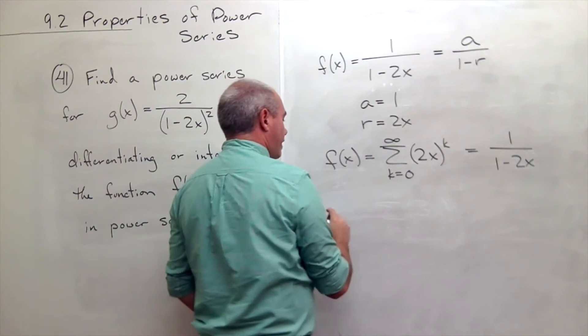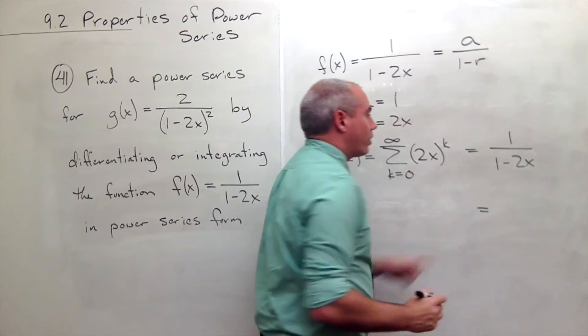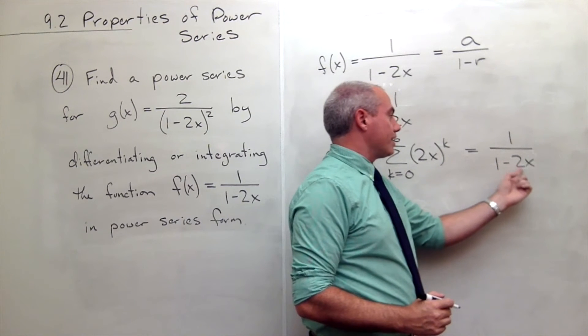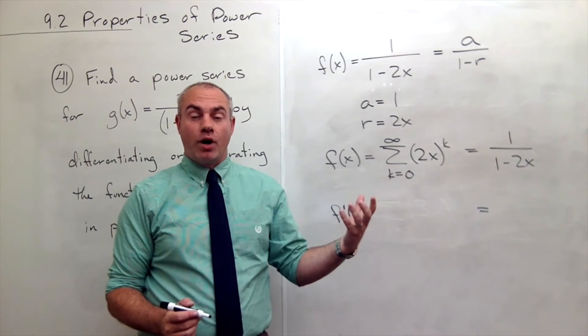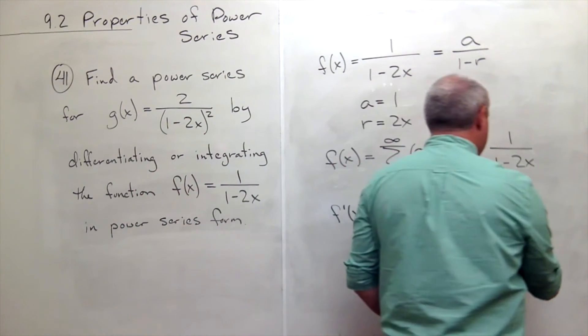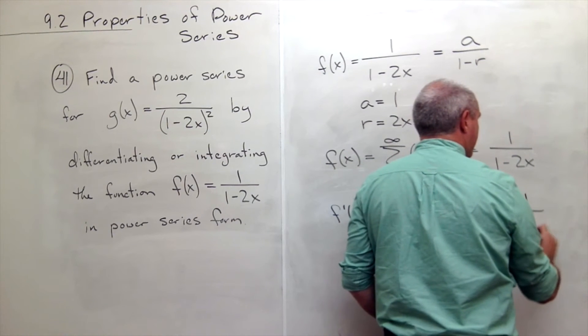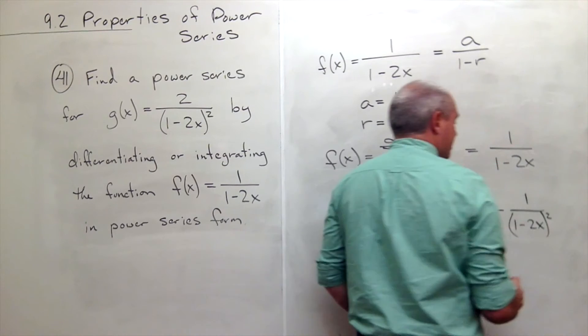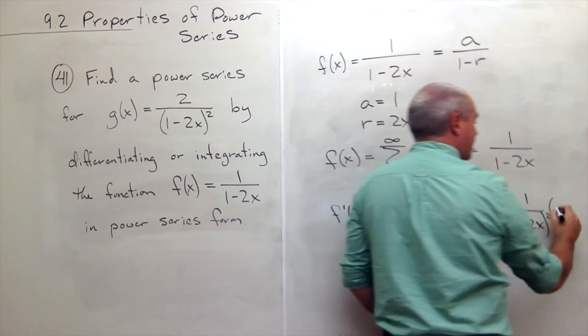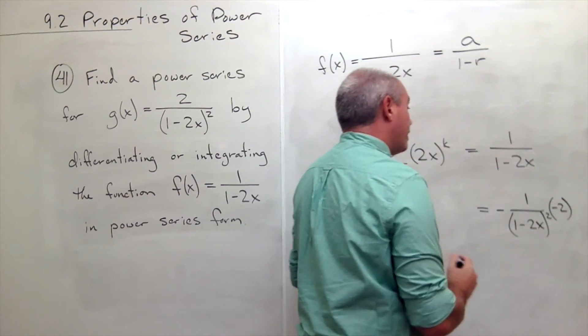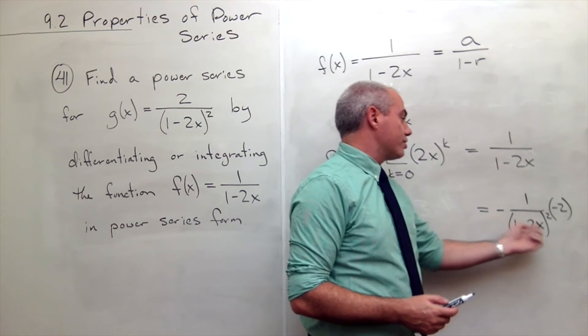So if I took a derivative, f prime of x, let's take the derivative first of 1 over 1 minus 2x. That could also be written as 1 minus 2x to the power negative 1. So if I use the chain rule, it's negative 1 over 1 minus 2x squared times by the chain rule. What's the derivative of 1 minus 2x? It's negative 2.